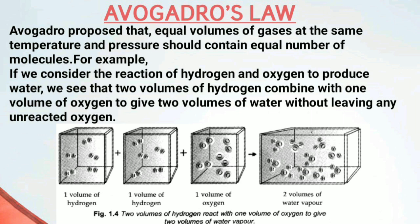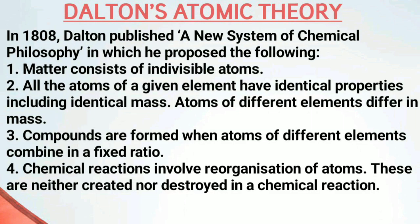Now let us move to our last topic: Dalton's atomic theory. In 1808, scientist John Dalton published a book named A New System of Chemical Philosophy, in which he proposed postulates about atoms. The postulates are: first, matter consists of individual atoms; second, all atoms of a given element have identical properties including identical mass; third, compounds are formed when atoms of different elements combine in a fixed ratio; and fourth, chemical reactions involve reorganization of atoms — they are neither created nor destroyed in a chemical reaction.